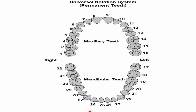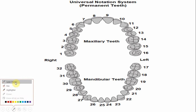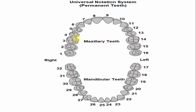Now let's discuss the number of this tooth in various tooth numbering systems. Starting from the central incisor, lateral, canine, first premolar, second premolar, and the first maxillary permanent molar. For the right maxillary first molar, the number is three in the universal numbering system, whereas for the left maxillary first molar, the number is 14.